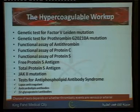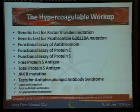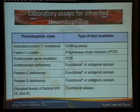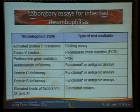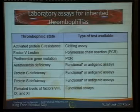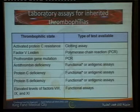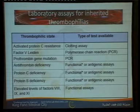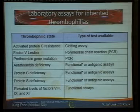For antiphospholipid antibody syndrome, we test three antibodies: lupus anticoagulant, anticardiolipin, and anti-beta-2-glycoprotein. Regarding the tests, it's important not to confuse them — we don't send for factor V assay. Factor V Leiden is a genetic mutation — qualitative, not quantitative. Some residents send for factor V level, which is typically normal. The correct test is for the mutation. Sometimes we do activated protein C resistance as a clotting assay screening test.